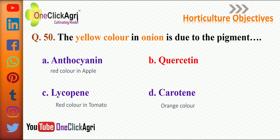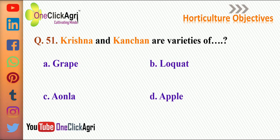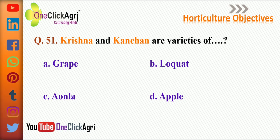Krishna and Kanchan are the varieties of amla. The right answer for this question is amla. And also the famous variety for amla is NA7, meaning Narendra 7 variety of amla.